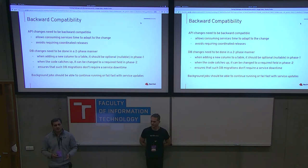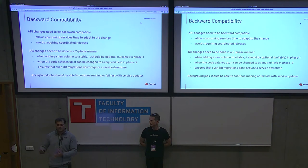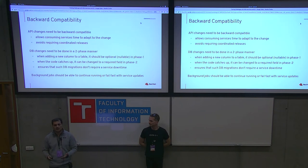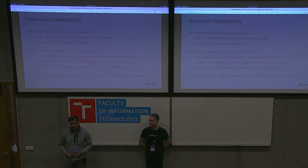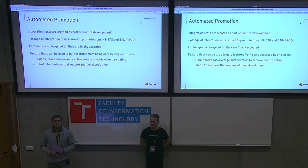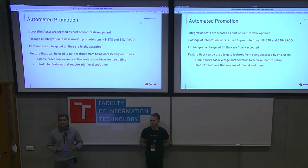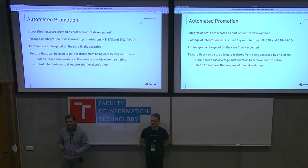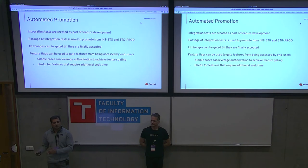We also reviewed our background jobs. We have quite a few scheduled at different times of day, and it's not feasible to ensure software releases happen only when no background jobs are running. So we need to make sure background jobs can either fail fast or continue to work as expected when the underlying software updates beneath them. We also looked at automation around promotion from integration to stage to prod. Even if we aren't there yet with automated promotion, thinking about this helps ensure changes are in the right direction. Integration tests created as part of feature development can be used to promote from integration to staging.